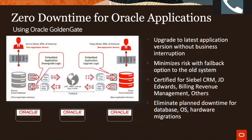Zero downtime migration also applies when migrating Oracle applications like Siebel CRM, BRM, or JD Edwards — upgrading to the latest application version without business interruption, with failback option to the old system. It's certified with different ERP systems and can eliminate planned downtime for database, operating system, and hardware migrations. This works on-premise to on-premise, on-premise to cloud, cloud to cloud, or cloud to on-premise.